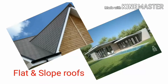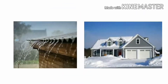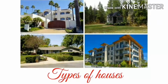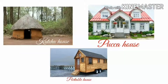Roofs are of two kinds: sloping and flat. Sloping roofs are preferred in heavy rainfall and snowfall regions so that rainwater and snow slide off easily. Flat roofs are mostly preferred in hot and dry places.